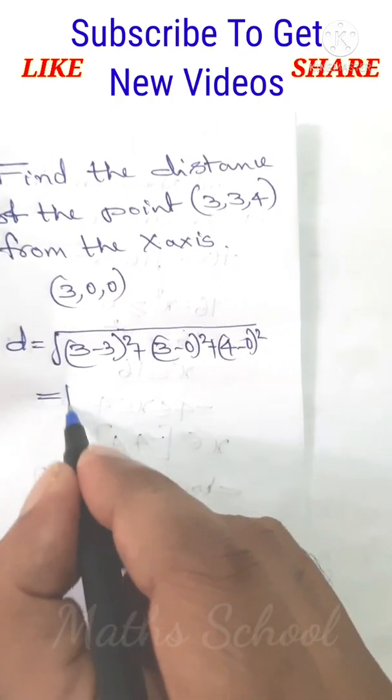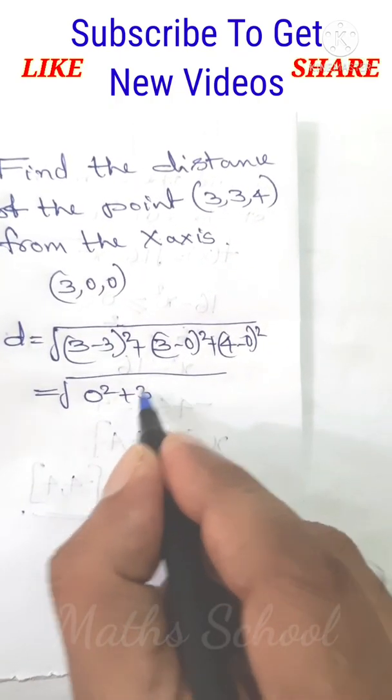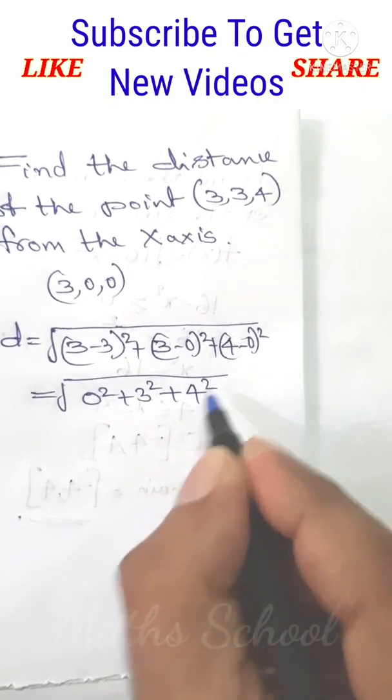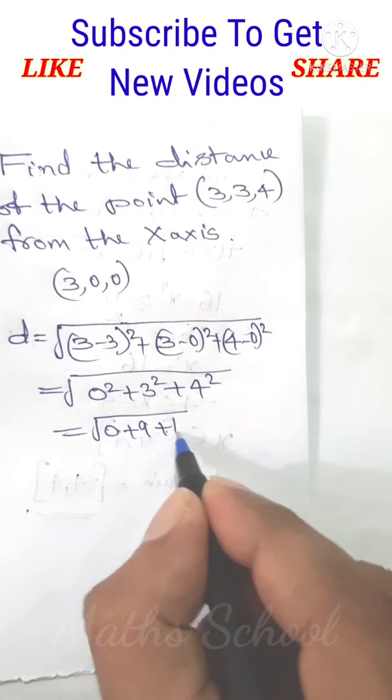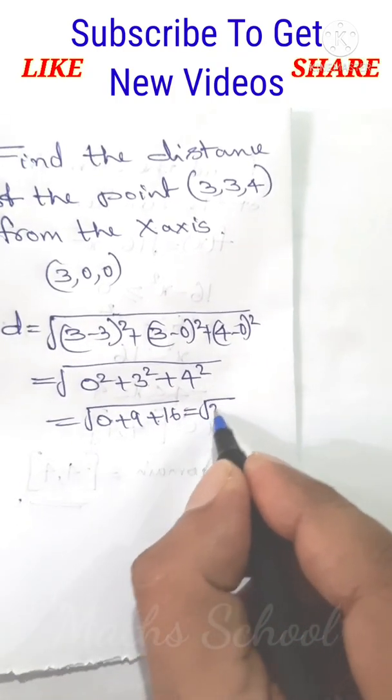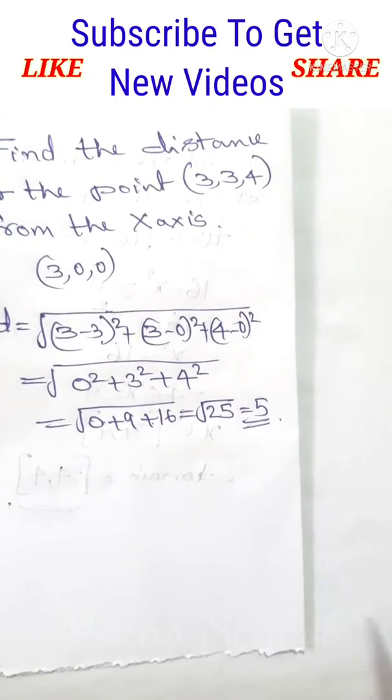That's equal to root of 3 minus 3 is 0, 0 square plus 3 square plus 4 square. That's equal to root of 0 plus 9 plus 16 equal to root 25 equal to 5. Therefore the required distance is 5 units.